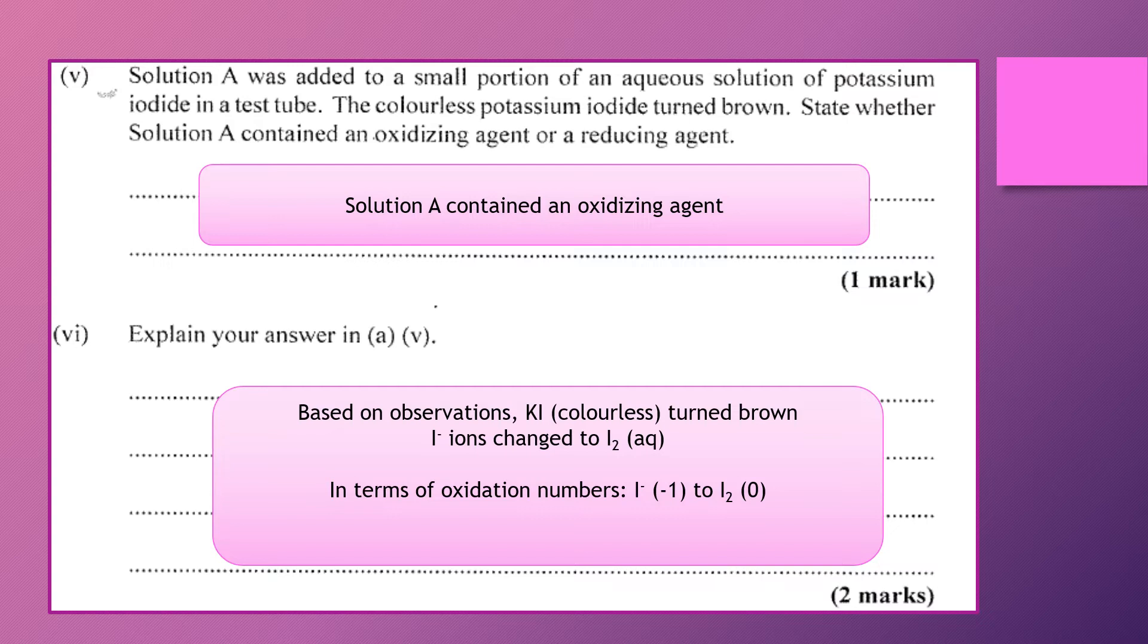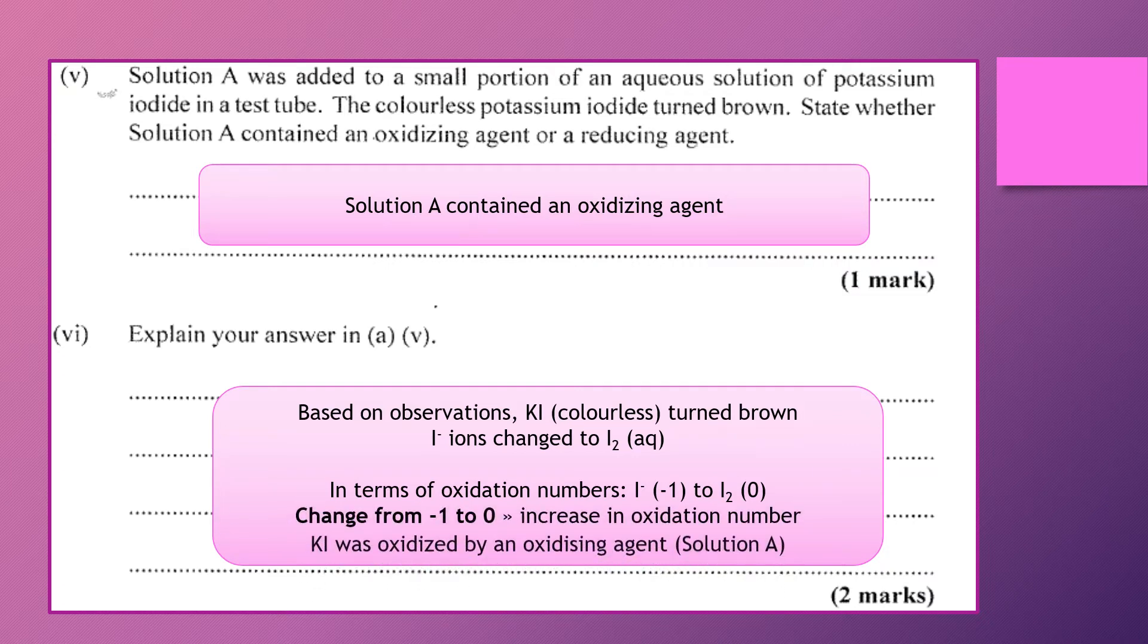And so if we looked at the oxidation numbers, it would be changing from minus one to zero. So it is increasing in terms of the oxidation numbers from iodide to iodine, which means that it is being oxidized by solution A. And solution A is the oxidizing agent.